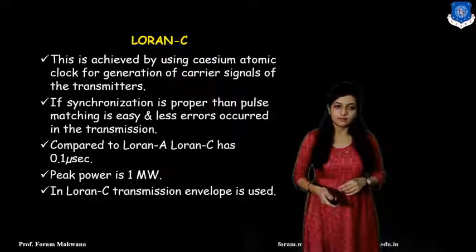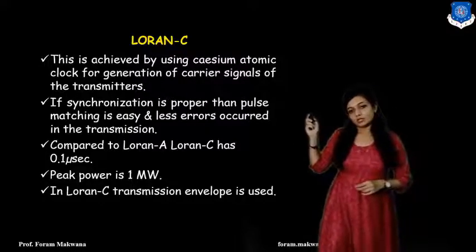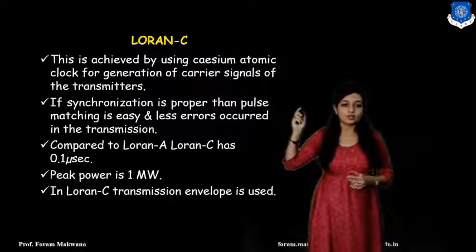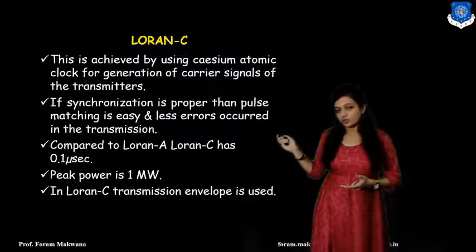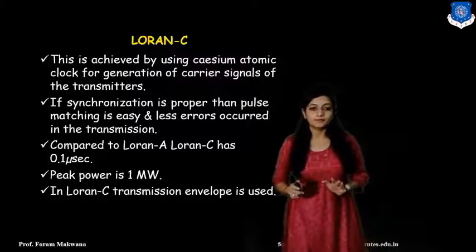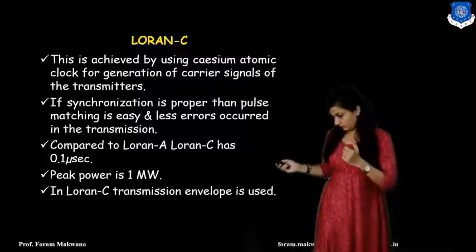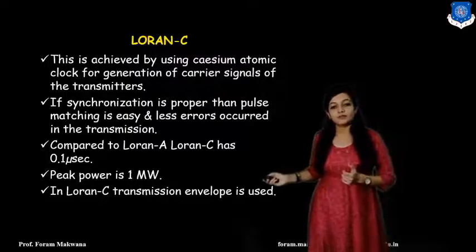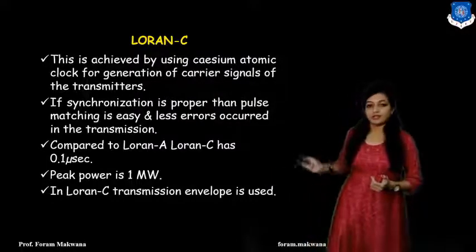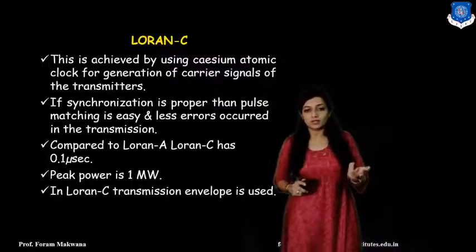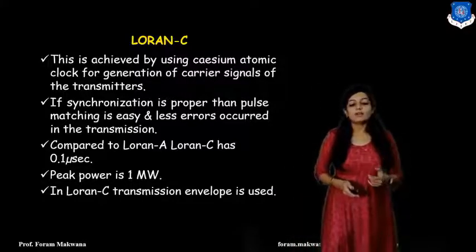Accuracy is achieved using the cesium atomic clock for generation of the carrier signal of the transmitter. If synchronization of the transmitter is proper, pulse matching is easy and less error occurs on the transmission side. Compared to Loran-A, Loran-C has a probability of error in signal arrival delay of 0.1 microseconds, whereas for Loran-A it was around 1.52 microseconds. Peak power is 1 megawatt and a transmission envelope is used in Loran-C.